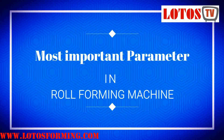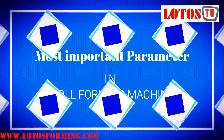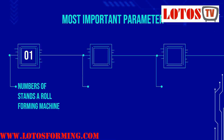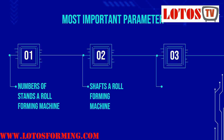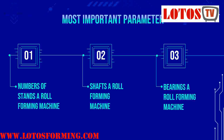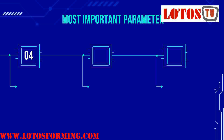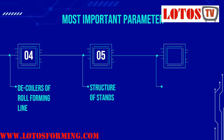Now I want to talk about the most important parameters in a roll forming machine. Number one is the number of stands. Number two is the shaft. Number three is the bearing used for each shaft. Number four is the decoiler of the forming line. Number five is the structure of stands. Number six is the material of rolling tools.